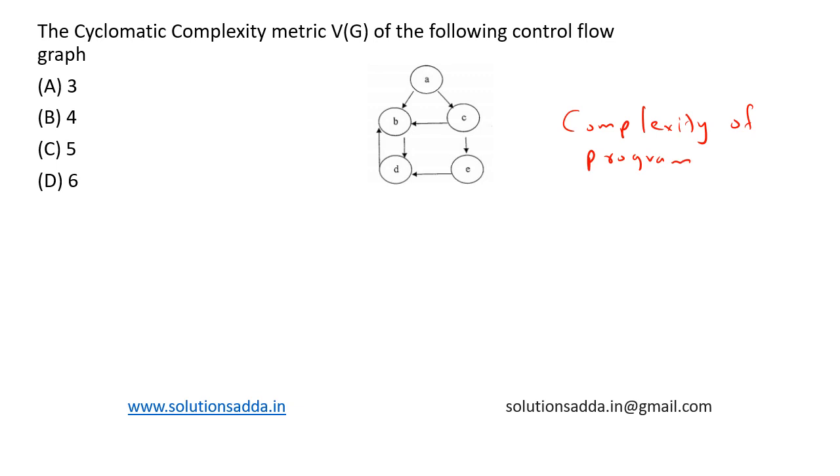Cyclomatic complexity is computed using the control flow graph of the program, and the complexity M is defined as M equals E minus N plus 2P, where E represents the...